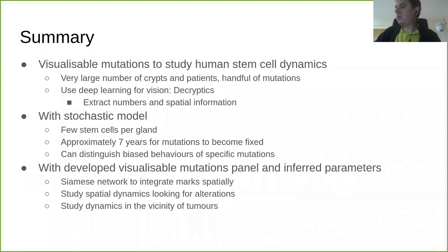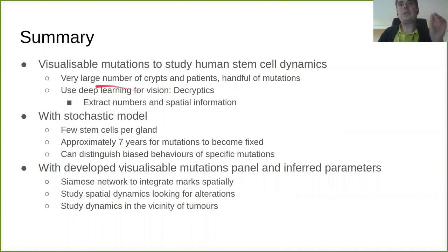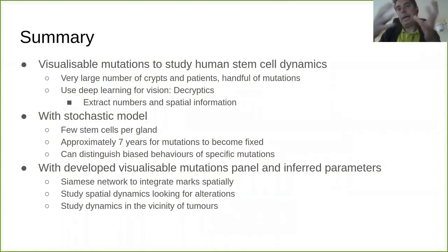In summary, we've described how we use visualizable mutations to study human intestinal stem cell dynamics. This approach — using cheap, visualizable assays — allows us to look at very large numbers of crypts, very large numbers of tissues, and many patients.